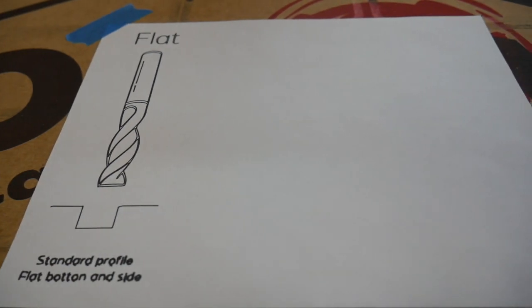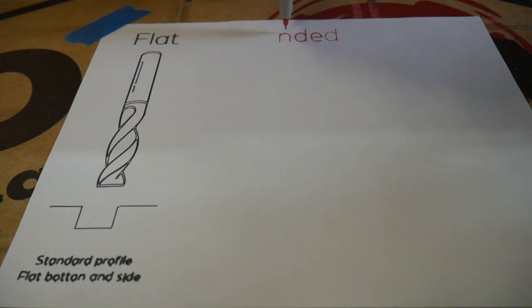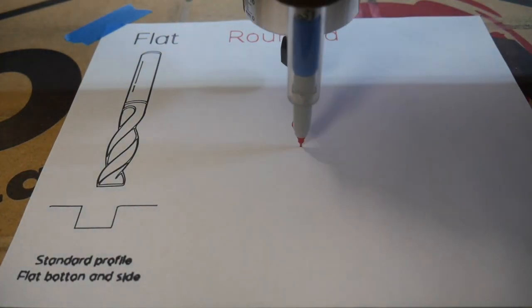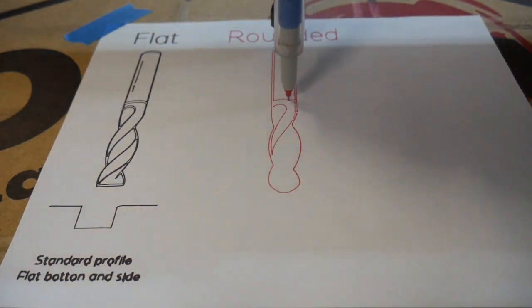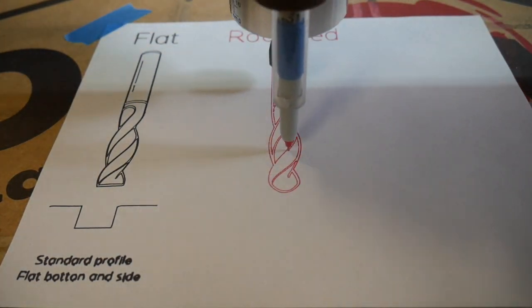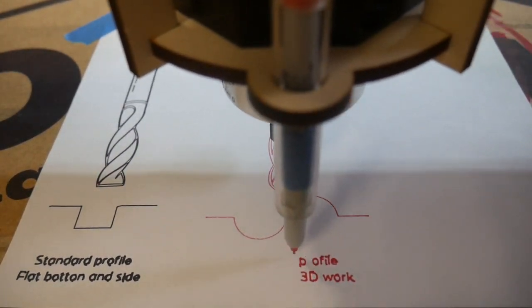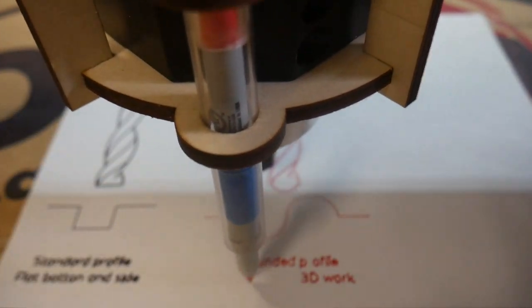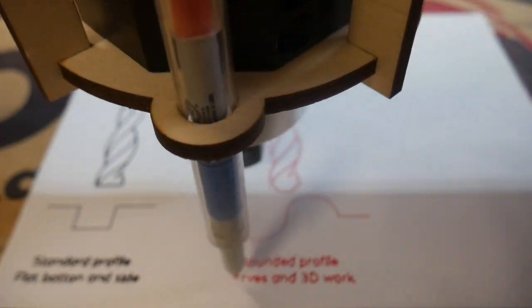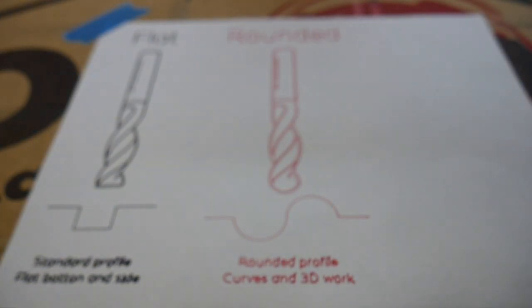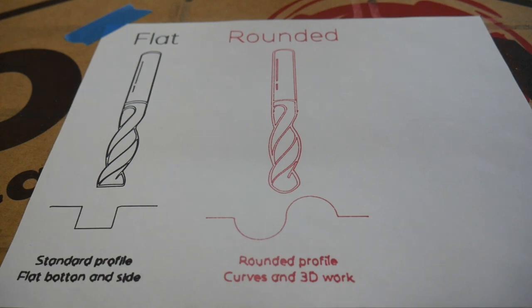Next up is the rounded bit. It's very similar to the flat bit in that it has parallel sides, but it has a rounded bottom. This is used to do curves and 3D work. It's particularly good at making that kind of rounded shape for the profile. I probably won't cover 3D work in the basic series, but I will try and go into some detail in a later video.